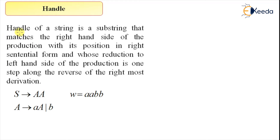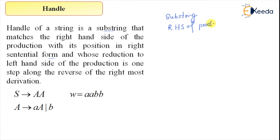The definition says that the handle of a string is a substring that matches the right-hand side of the production, with its position in the right sentential form. The first key point is a substring that matches the right-hand side of the production. The second key term is: with its position in the right sentential form, meaning an intermediate step of the rightmost derivation.